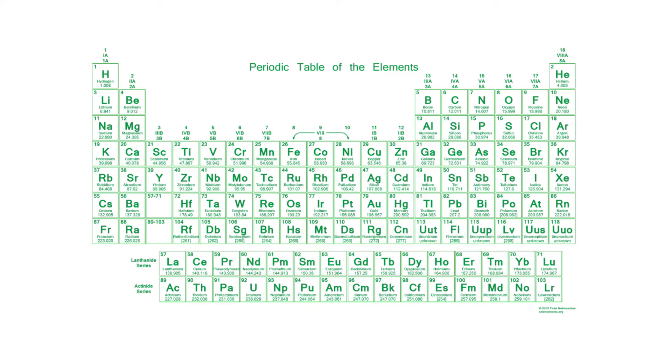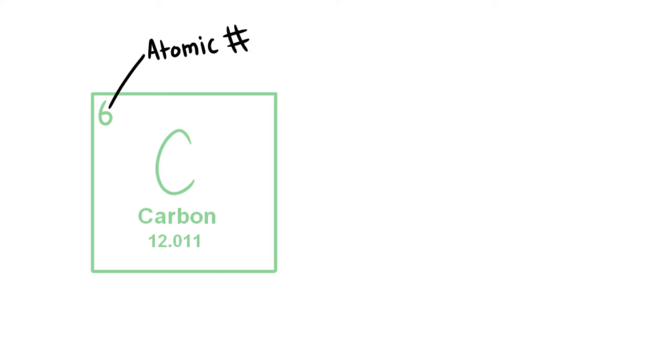This is a periodic table. If we get closer, you'll see that every atom is organized in these neat little boxes. The atomic number is usually on top and they'll tell you the number of protons and electrons. They're the same because they need to be in order for the atom to be stable.